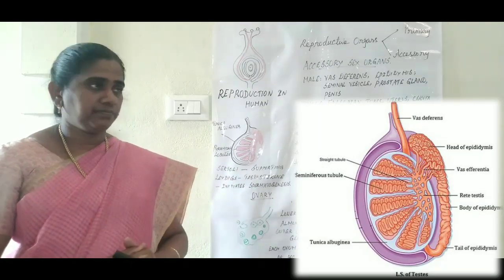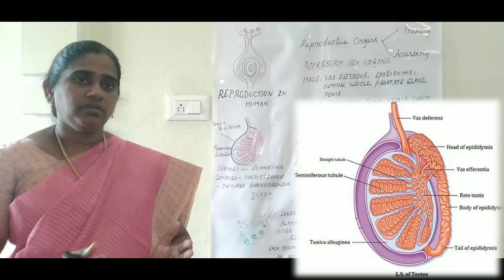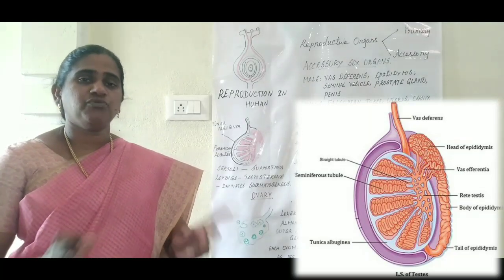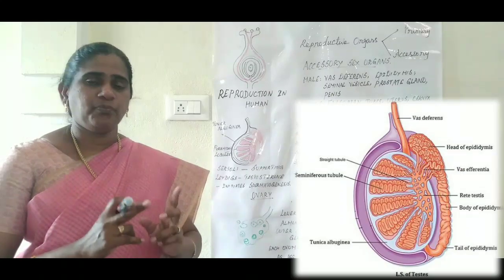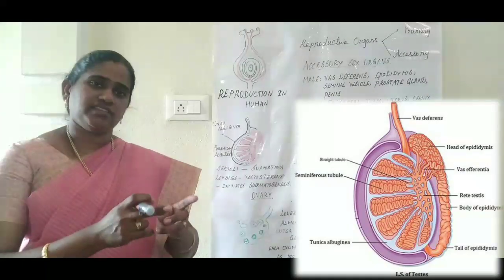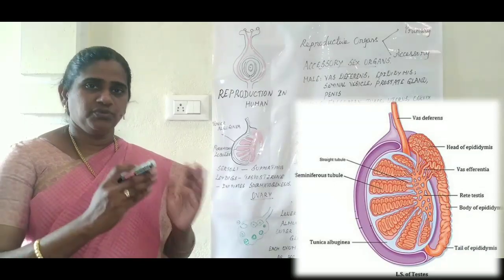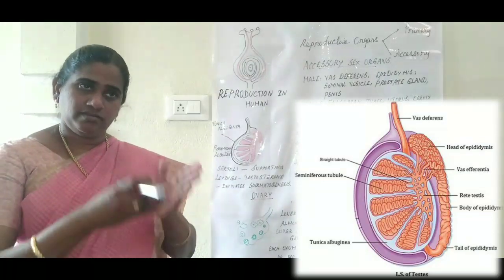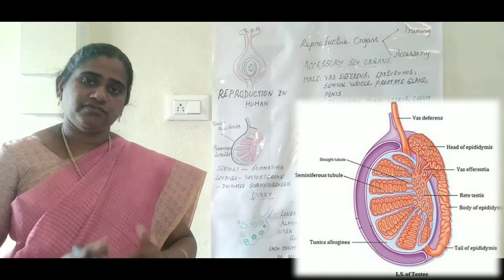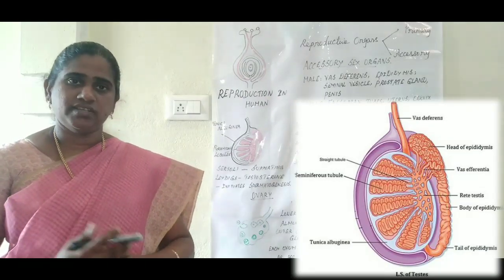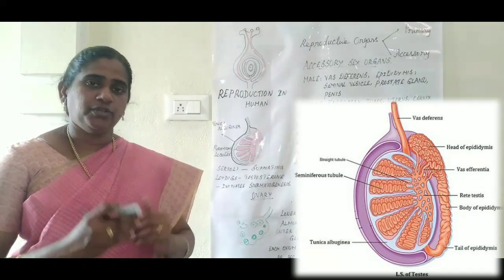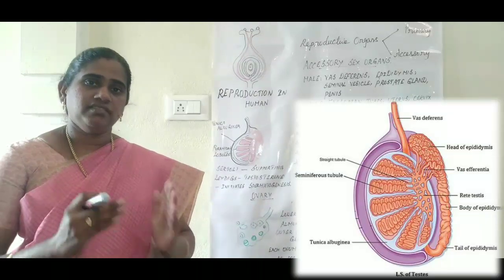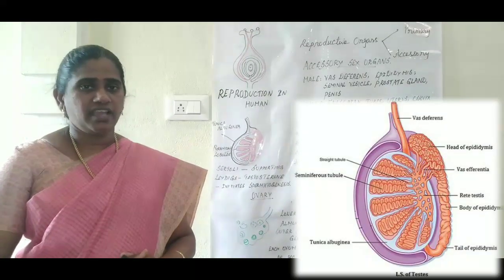In females, the accessory organs include the fallopian tubes. The female reproductive system has a pair of ovaries. From each ovary, a tube arises called the fallopian tube or oviduct. These two oviducts join into a sac-like structure called the uterus. This fallopian tube and uterus are followed by the cervix, then the vagina, which is also called the birth canal. So the fallopian tubes, uterus, cervix, and vagina are called the accessory organs in females.